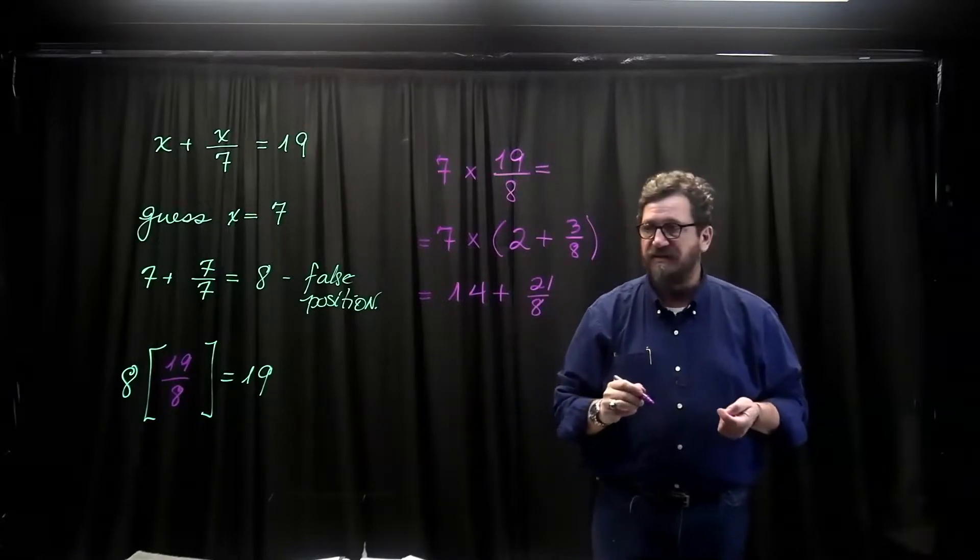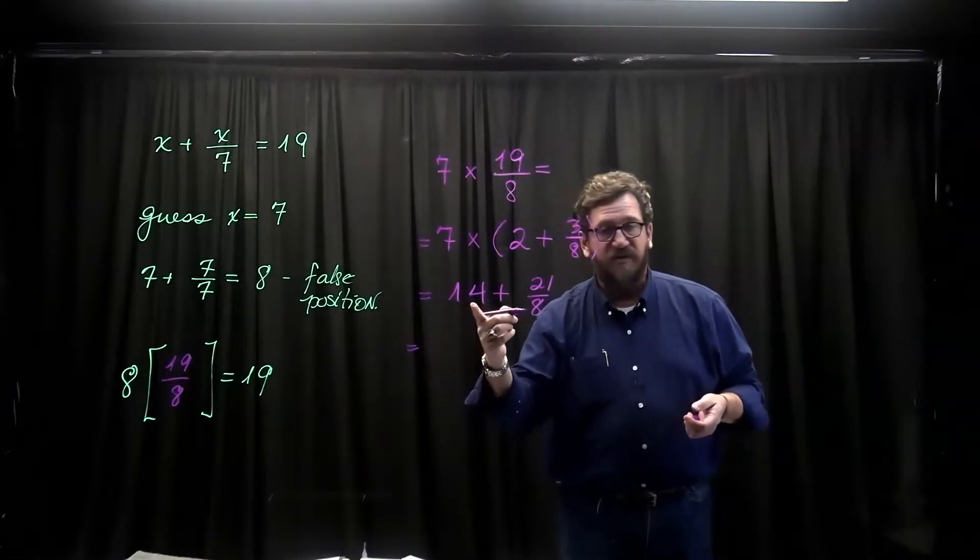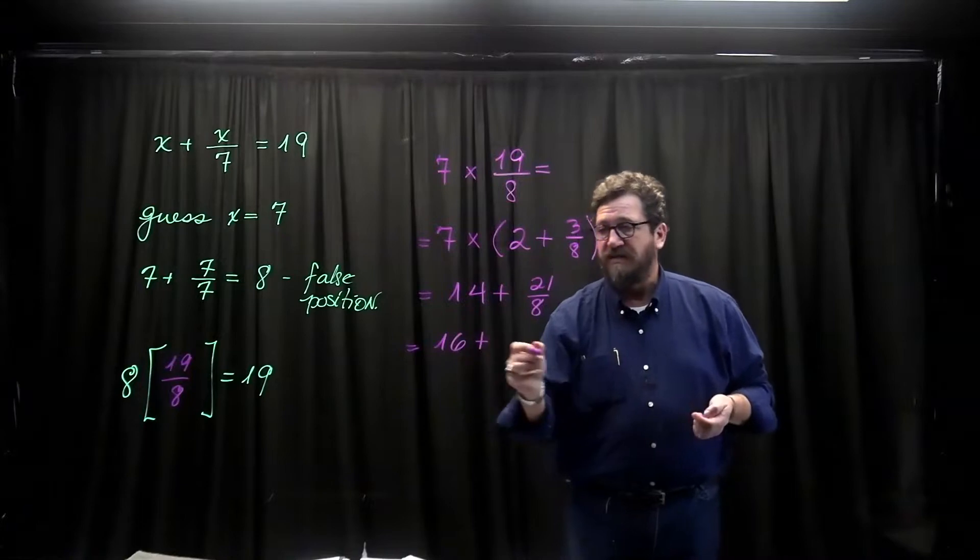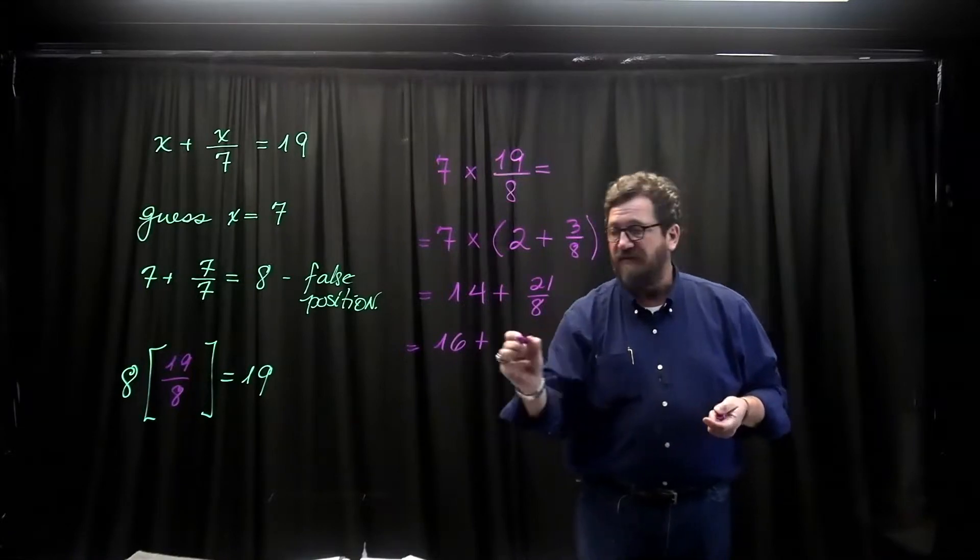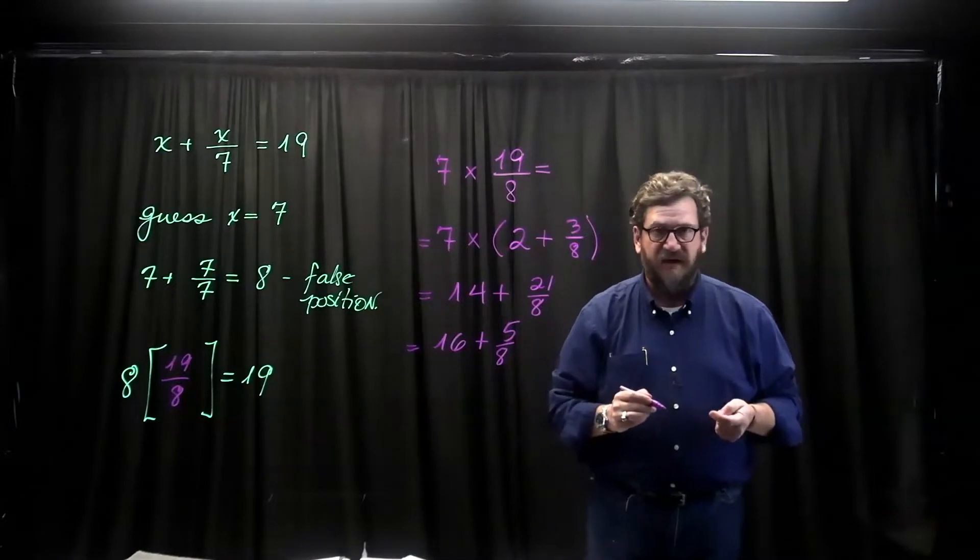I'm going to simplify this. 8 goes into 21 twice. So I'm going to add the 2 to the 14 to make 16, plus, well, I'm going to have 5 left over. 5 eighths. 16 and 5 eighths.